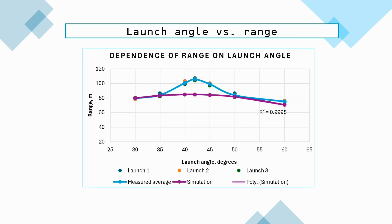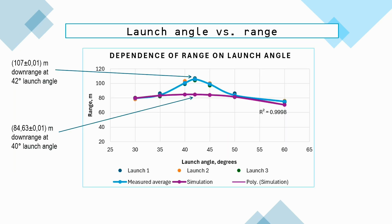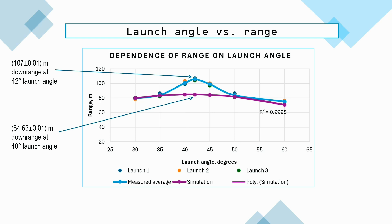Here, the maximal downrange is reached at angles lower than 45 degrees in both empirical and numerical cases, and after the range reaches its peak, the further increase in launch angles is followed by the range decrease.